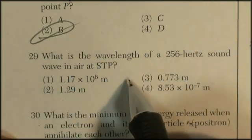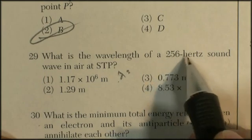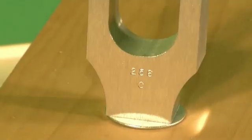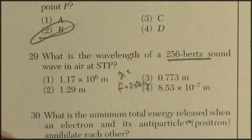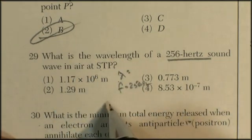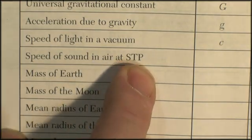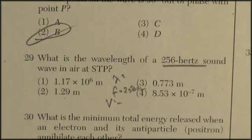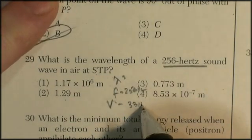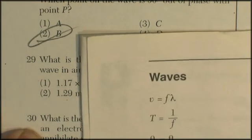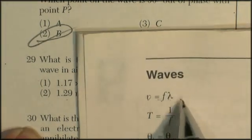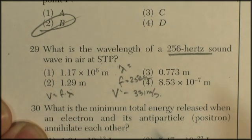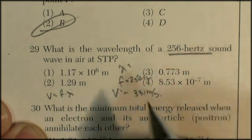Question 29: What is the wavelength of a 256 hertz wave? You need to realize that this is frequency - 256 hertz. It's in air at standard temperature and pressure. Speed of sound is 3.31 times 10 to the 2 meters per second. So velocity equals 331 meters per second. On the formula sheet, we know that velocity equals frequency times wavelength. I know frequency and velocity, I'm looking for wavelength.